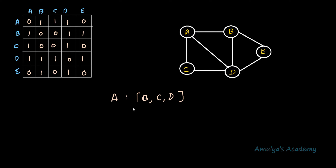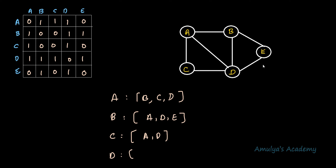Here we are not storing values like 0 or 1; we are storing the adjacent node itself. For b, the adjacent nodes are a, d, and e. For c: a and d. For d: a, b, c, and e. And for e: b and d. So this is the adjacency list — instead of storing whether there is an edge from one node to another, we make a list of adjacent nodes of every node and store that.